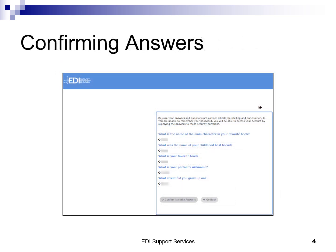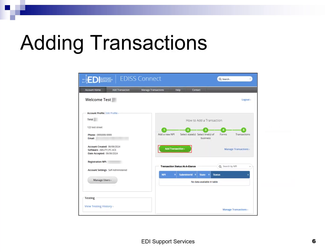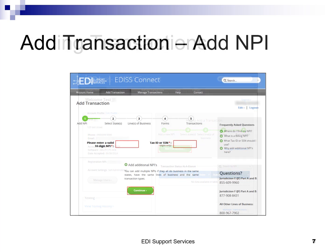It's important to keep these answers and questions in a safe spot, as they are used to assist in accessing the account. Click confirm security answers to continue, then click continue and you will be directed to the provider dashboard. At any time, you can update the company information by clicking edit profile from the home page. Next, click on add transaction. To the right, frequently asked questions are a quick reference that answer questions specific to the step or page you are on.